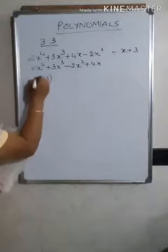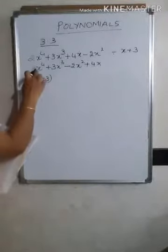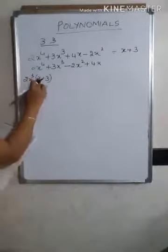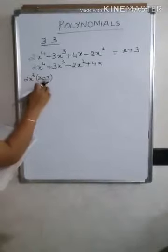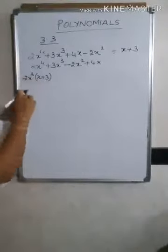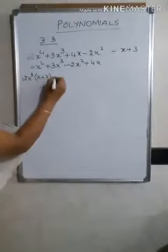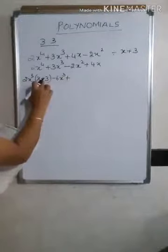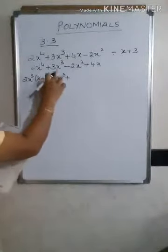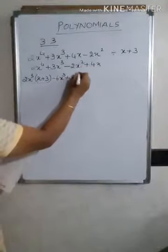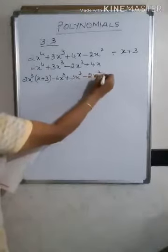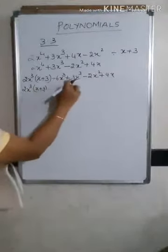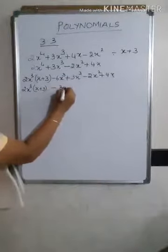Each term of the dividend must be expressed in terms of x plus 3. First, write the divisor x plus 3. What should I multiply by x to get 2x⁴? I need to multiply by 2x³, because 2x³ times x gives 2x⁴. But multiplying also gives the extra term 2x³ times 3, which is 6x³. Since this extra term is positive, write it with the opposite sign: minus 6x³. Then write the remaining terms: plus 3x³ minus 2x² plus 4x.